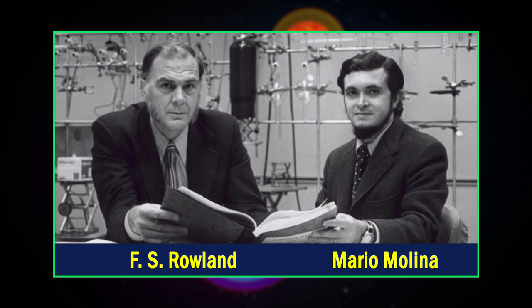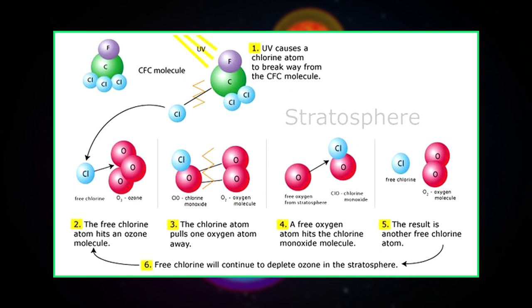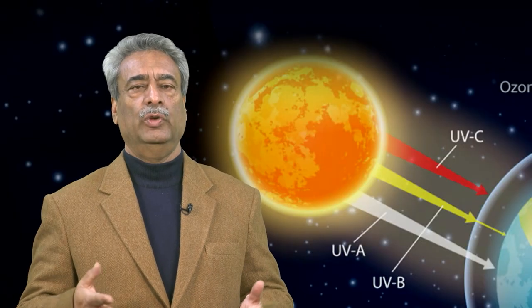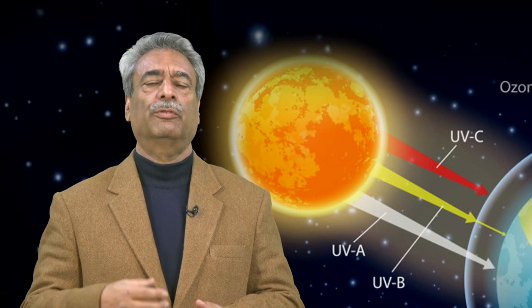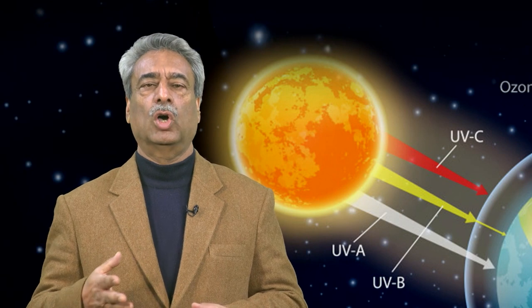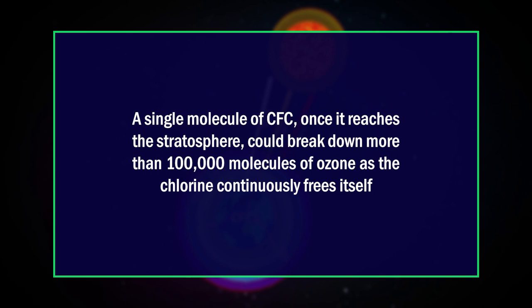Rowland and Molina in 1974 speculated that ultraviolet radiation could break a chlorine atom from a CFC molecule. Chlorine acts as a free radical that reacts with an ozone molecule and creates chlorine monoxide, which is unstable. It then attracts a single oxygen atom, producing an oxygen molecule and once again freeing the chlorine radical. This produces a self-perpetuating cycle that can continuously break down ozone molecules.